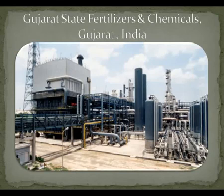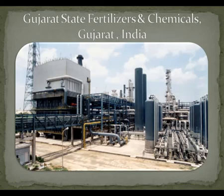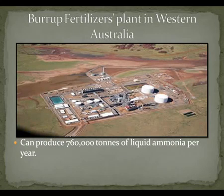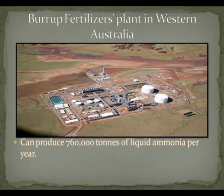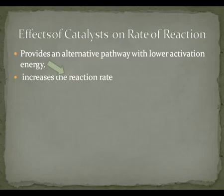As you can see in this slide, this is Gujarat State Fertilizers and Chemicals located in Gujarat, India. And in this slide, you are seeing Burup Fertilizers plant located in Australia, which can produce 760,000 tons of liquid ammonia per year.